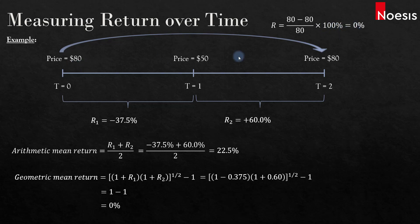That tells us that over those two years, we are actually making zero, nothing. The result coincides with the result of the geometric mean return. In fact, when measuring returns over time, we always use geometric mean return.